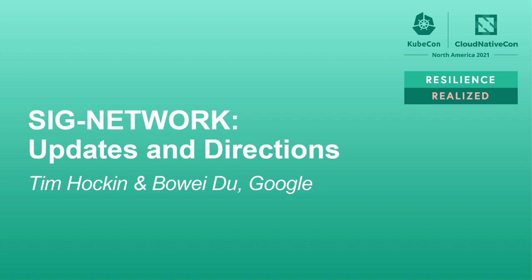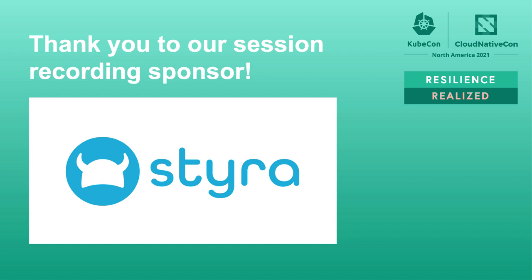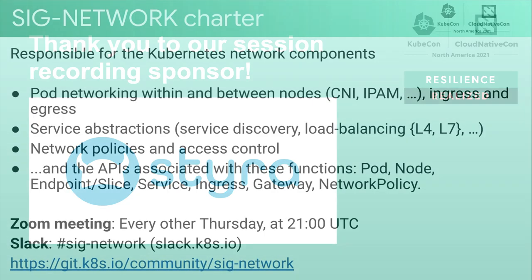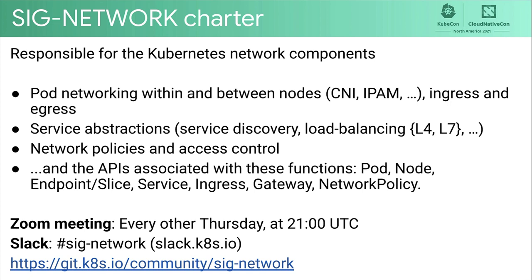Welcome to the SIG Network update and directions. We will be going over major things that have changed in SIG Network from the last KubeCon. The SIG Network special interest group is responsible for Kubernetes network components. This includes things such as pod networking within and between nodes, such as CNI and IPAM, ingress and egress traffic, and service abstractions including service discovery.